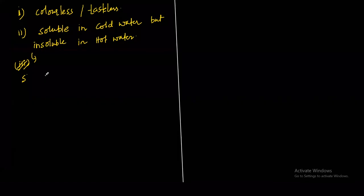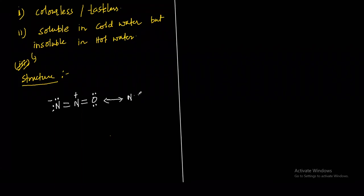The structure of N2O: when you draw it, you get N=N=O, where nitrogen carries a positive charge and oxygen has two lone pairs. The resonating structure is N≡N−O, where oxygen has three lone pairs and a negative charge, while nitrogen has the positive charge. Both resonating structures are important and may be asked.